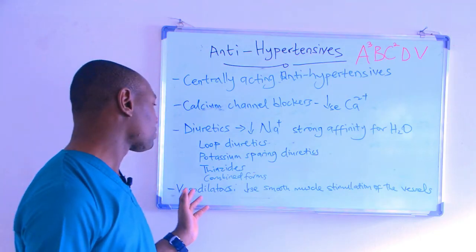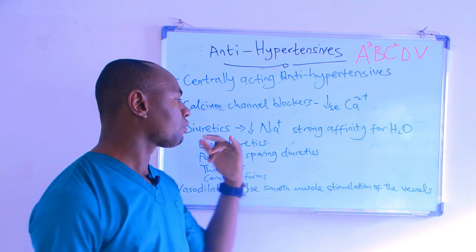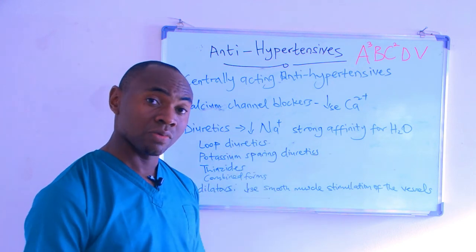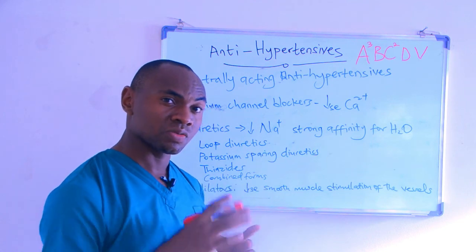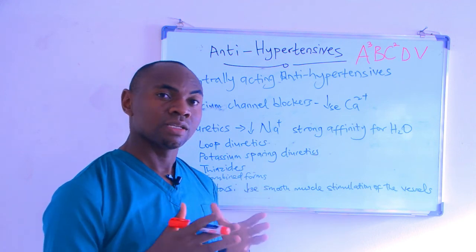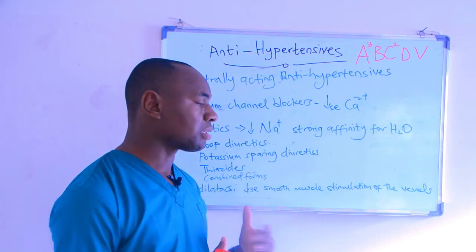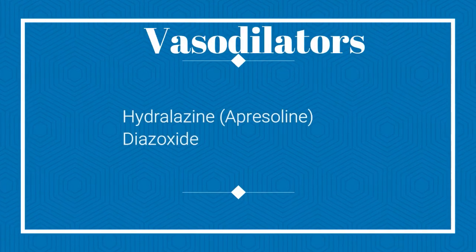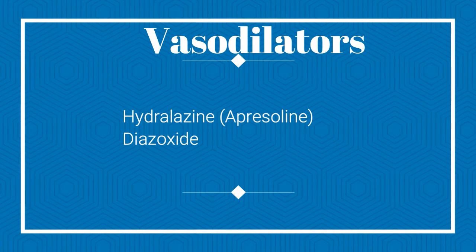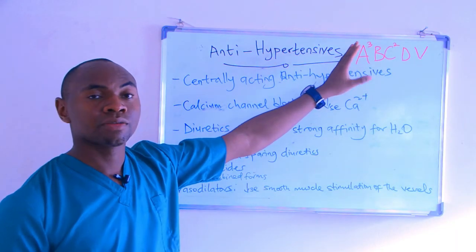The V stands for vasodilators. These are drugs that act directly on the smooth muscles of blood vessels to relax them, reducing smooth muscle stimulation and causing vasodilation. They are effective in most cases. Examples include hydralazine, also known as Apresoline, and diazoxide.